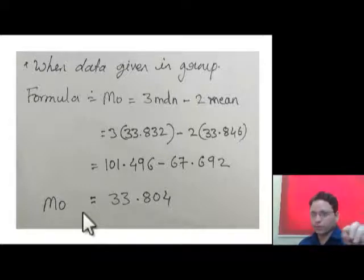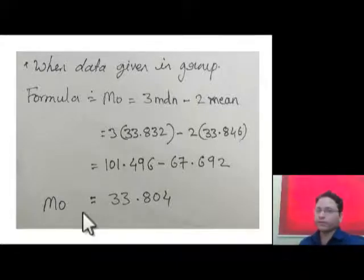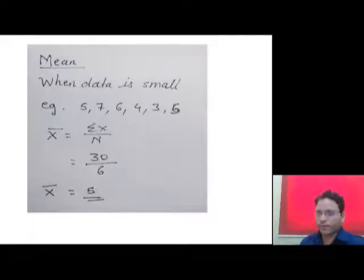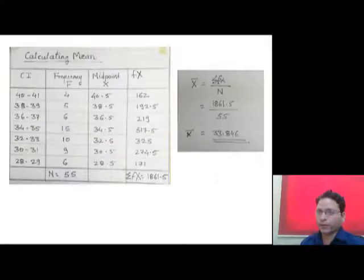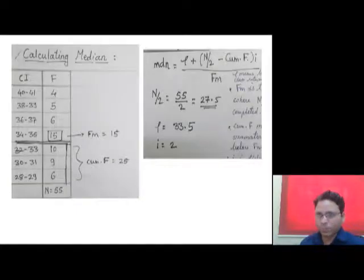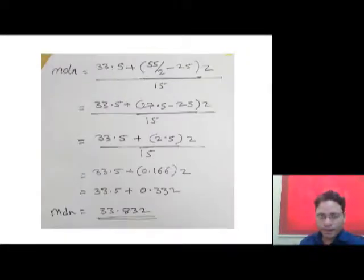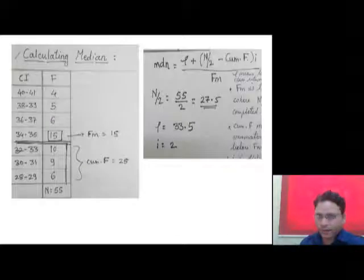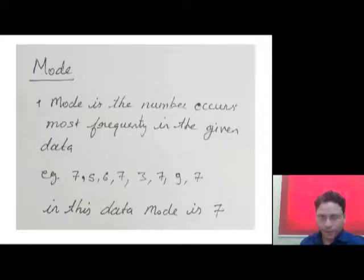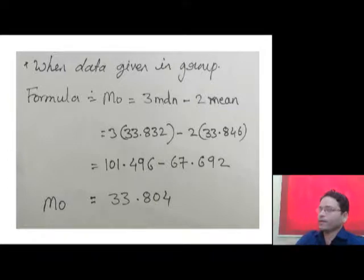So just apply three median minus two mean — put the values in and do the calculation, and you will get the mode. This way we calculated mean, median, and mode using the same grouped data. If you have any queries, please write in the comments. Thank you and best wishes.